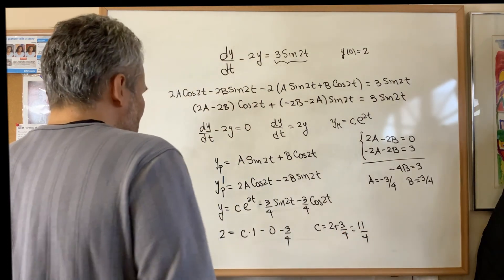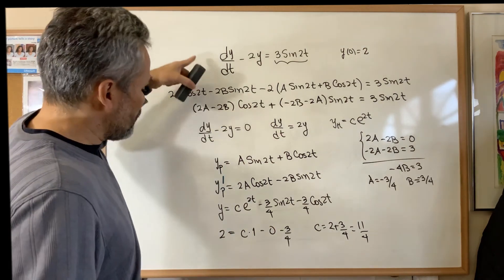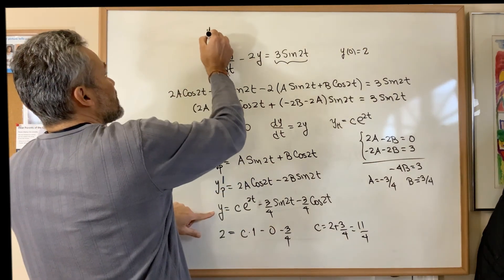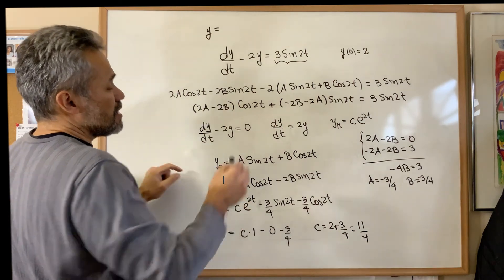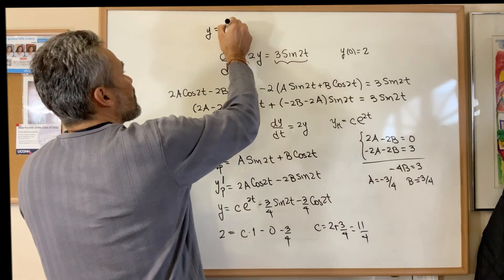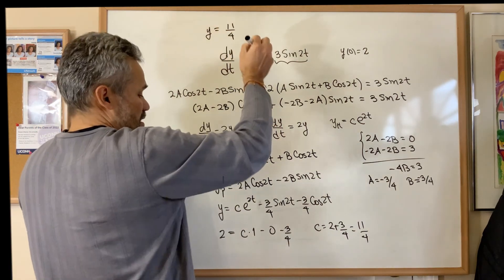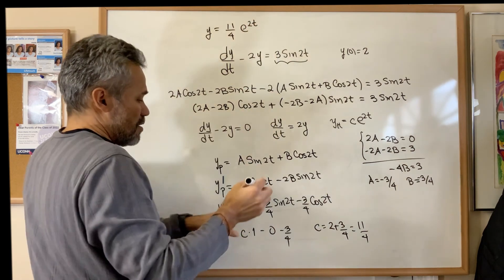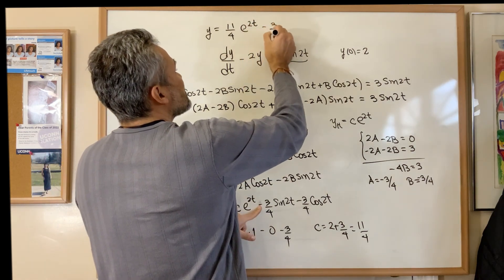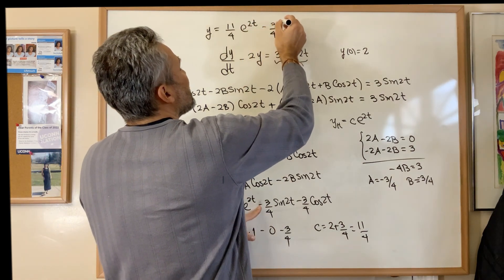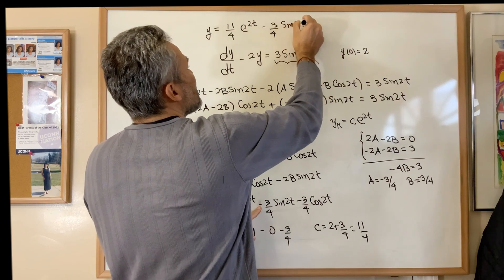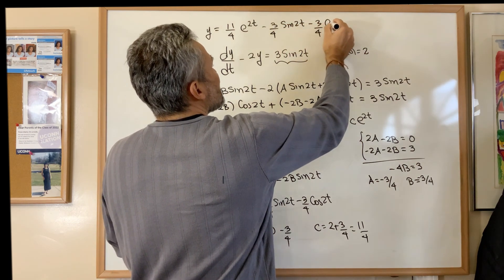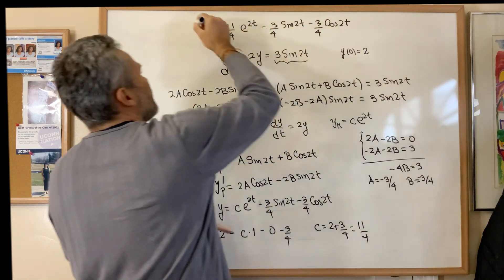And therefore the solution of the initial value problem is y equal to 11/4 e to the 2t minus 3/4 sine of 2t minus 3/4 cosine of 2t.